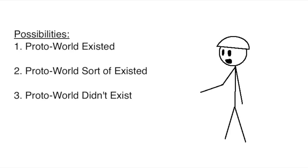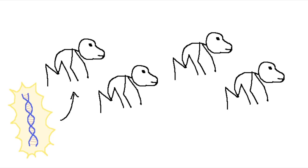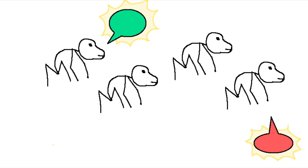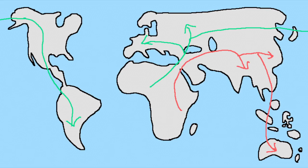Three, proto-world didn't exist at all. Like, maybe whatever genetic mutations allowed humans to speak spread through the population, and then, after the fact, language was invented multiple times, and those different initial languages eventually evolved into different groups of modern languages.